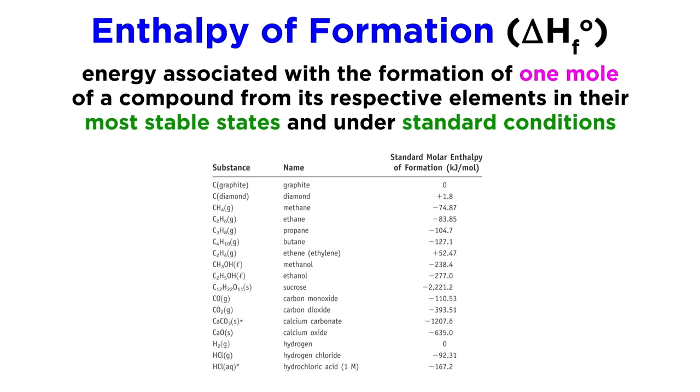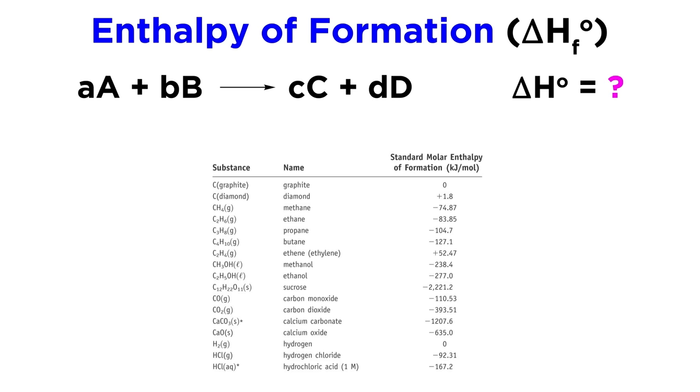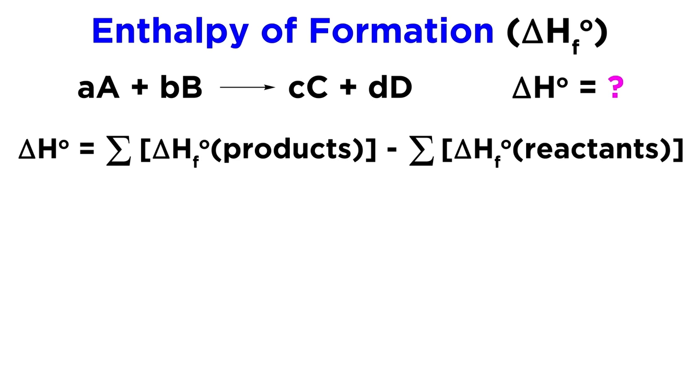We have tabulated enthalpies of formation for a wide variety of substances, and we can do simple calculations using this tabulated data to discern the change in enthalpy for a particular reaction. All we have to do is use this equation, whereby change in enthalpy can be calculated by finding the sum of the enthalpies of formation for all the products with respect to their stoichiometric coefficients, and subtracting from that the sum of the enthalpies of formation for all the reactants with respect to their stoichiometric coefficients.